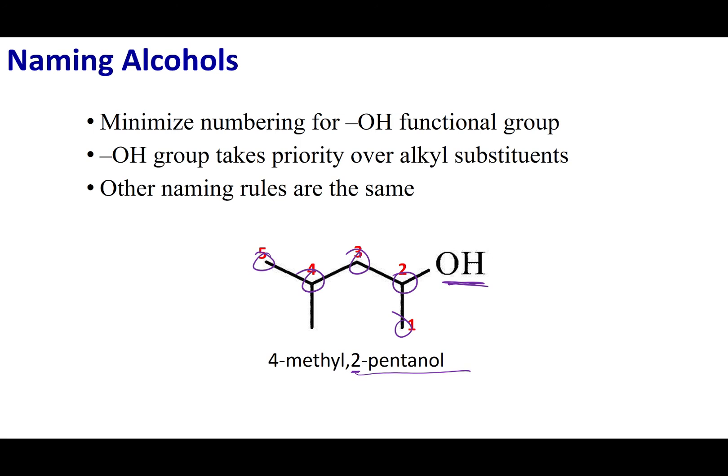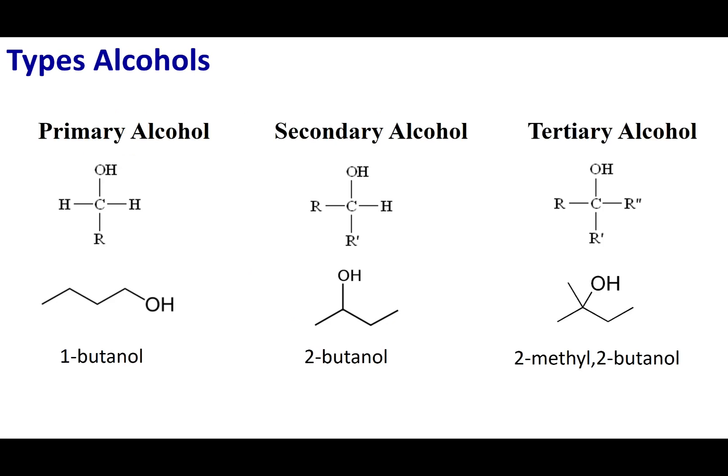Based on that numbering, we label our substituents. There's one branch, and its locant is on carbon number four. So this compound is called 4-methyl-2-pentanol.